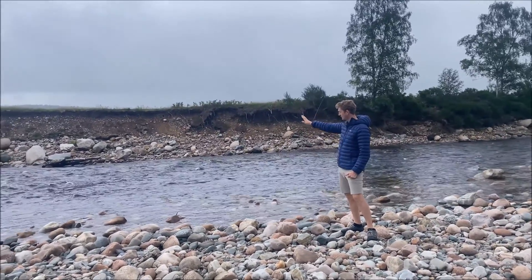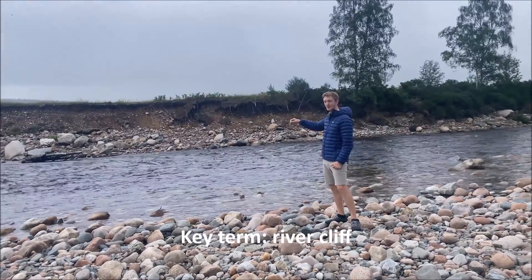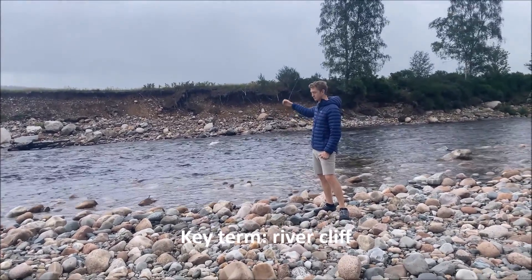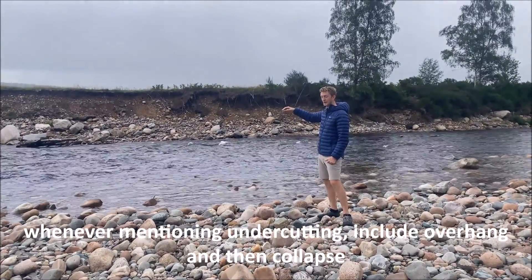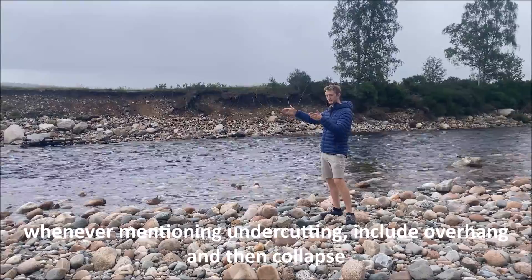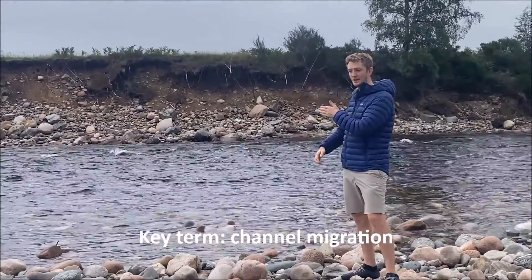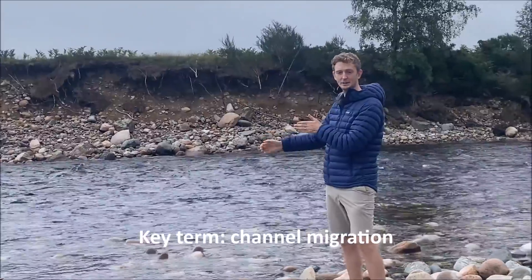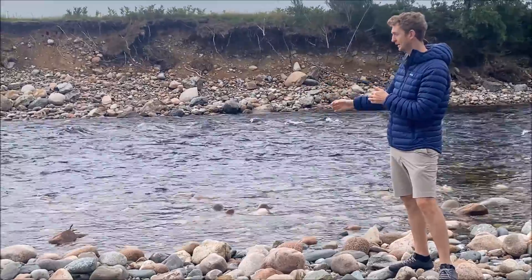That erosion causes a steep outside bank known as a river cliff. As it undercuts and erodes further, we'll get collapses and the meander will get bigger and bigger. The channel is migrating in that direction, which could potentially lead to the formation of an oxbow lake.